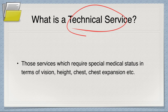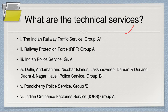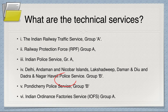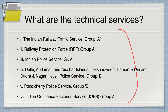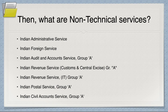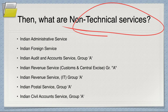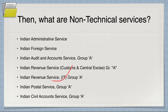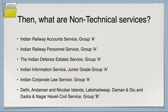The six technical services are: Indian Railway Traffic Service (IRTS), Railway Protection Force (RPF), Indian Police Service (IPS), DANIPS, Pondicherry Police Services (PPS), and Indian Ordnance Factories Service (IOFS). If you have had Lasik surgery you are disqualified from these. All remaining services are non-technical: IAS, IFS, IDAS, IRS Customs, IRS IT, Indian Postal Service, ICAS, IRAS, IRPS, IDES, IIS, ICLS, and finally DANICS.